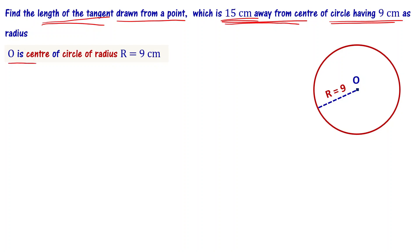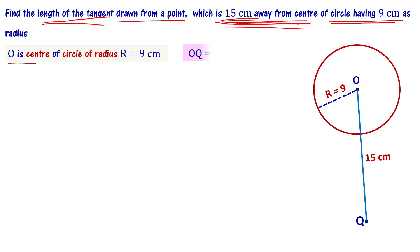Now we have to mark a point 15 centimeters away from the center, draw a tangent to the circle, and find its length.